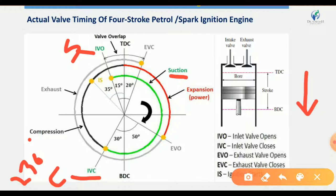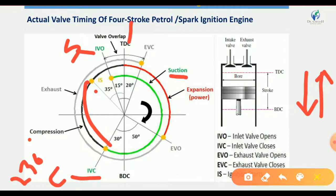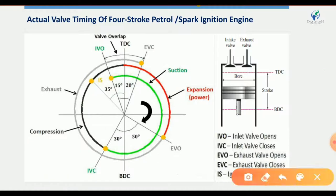After suction, compression starts. When the piston travels from BDC to TDC, compression begins 30 degrees before BDC. When TDC is reached, ignition occurs before the inlet valve opens. The compression stroke is complete at TDC, and then the expansion stroke begins.